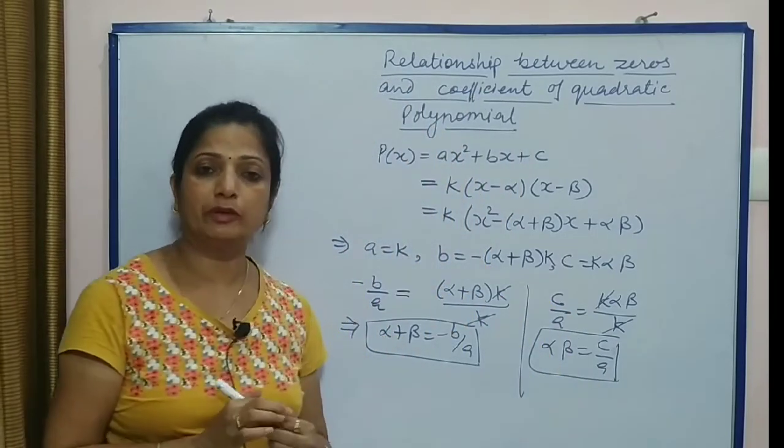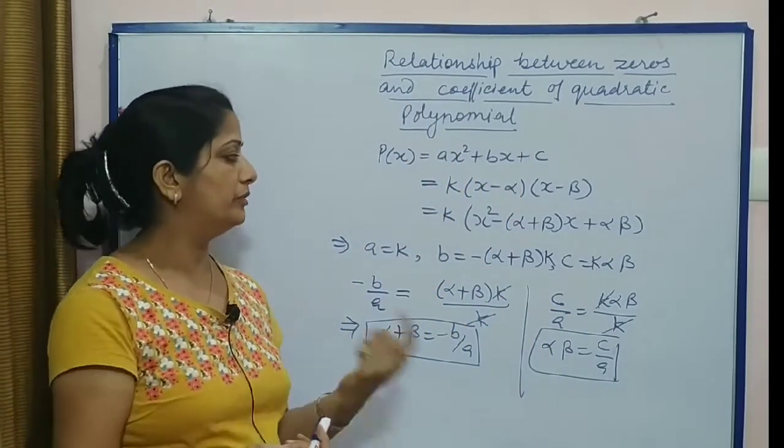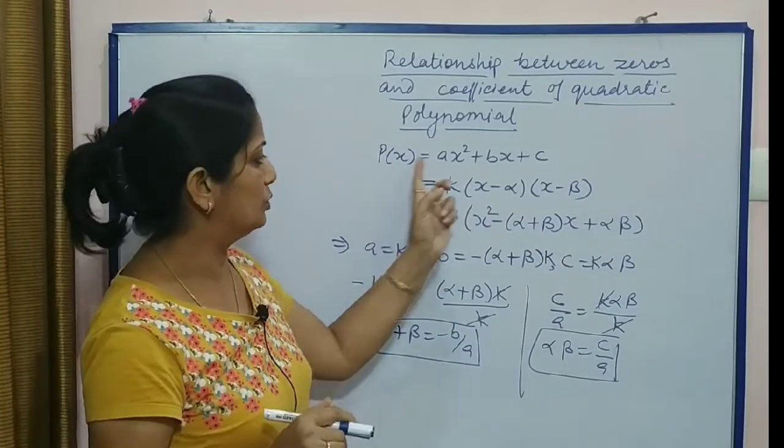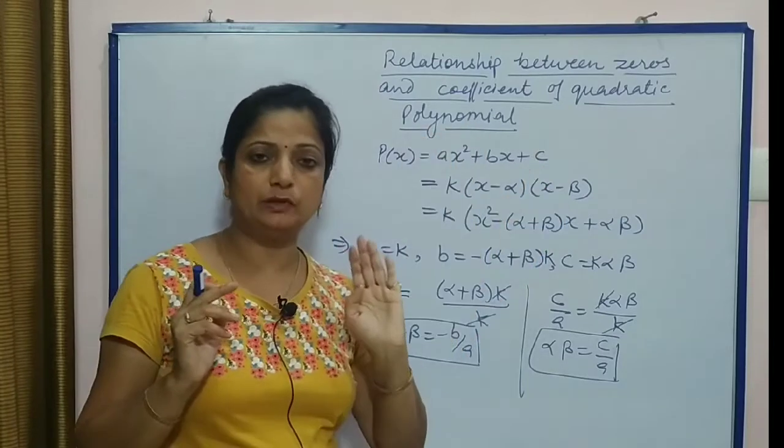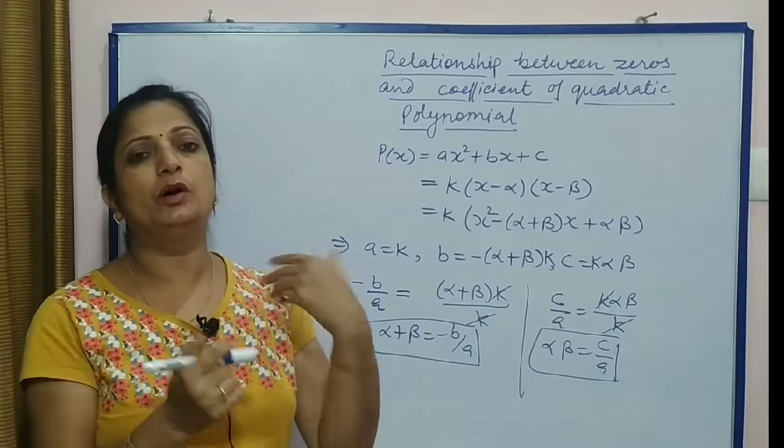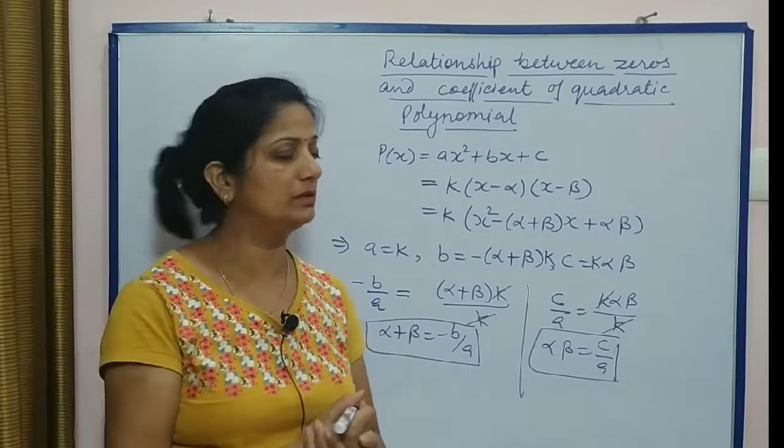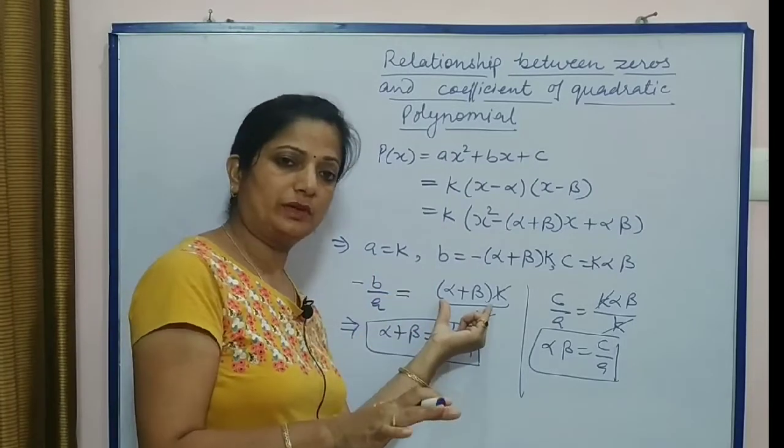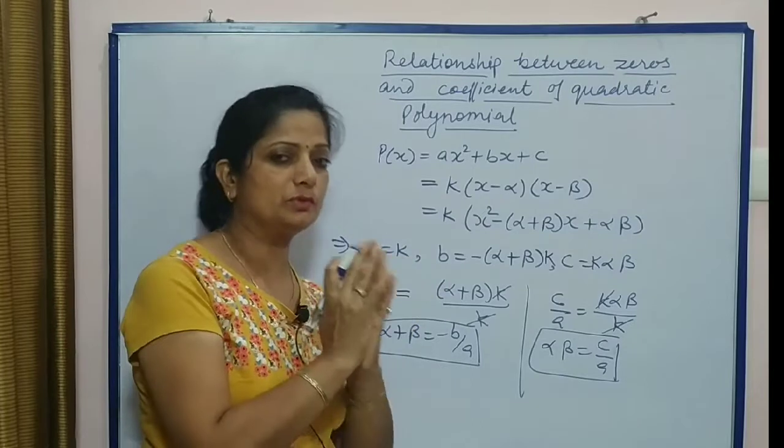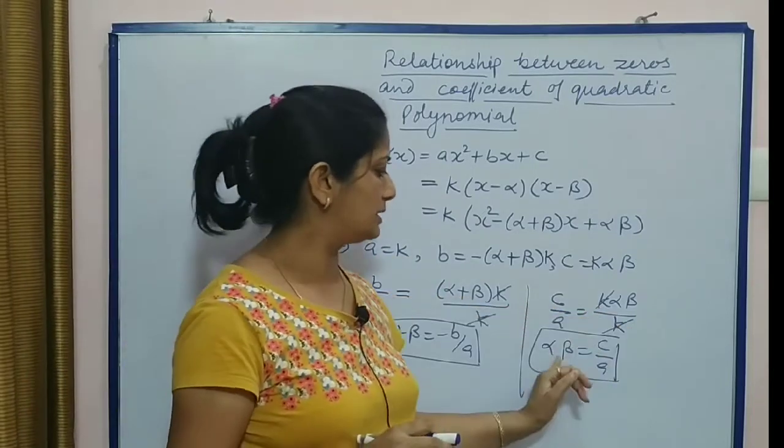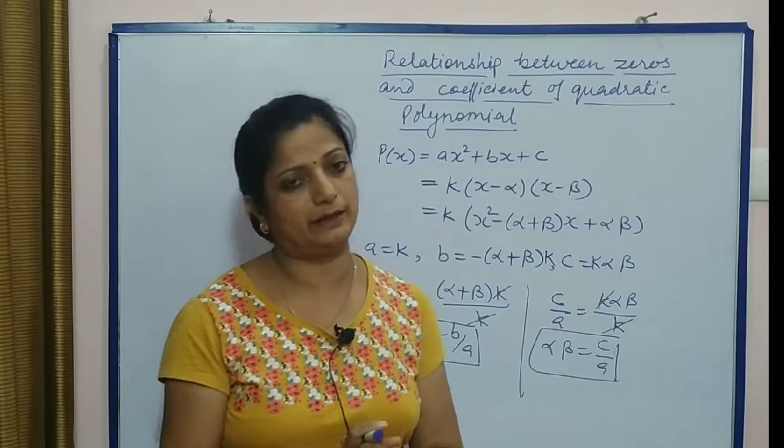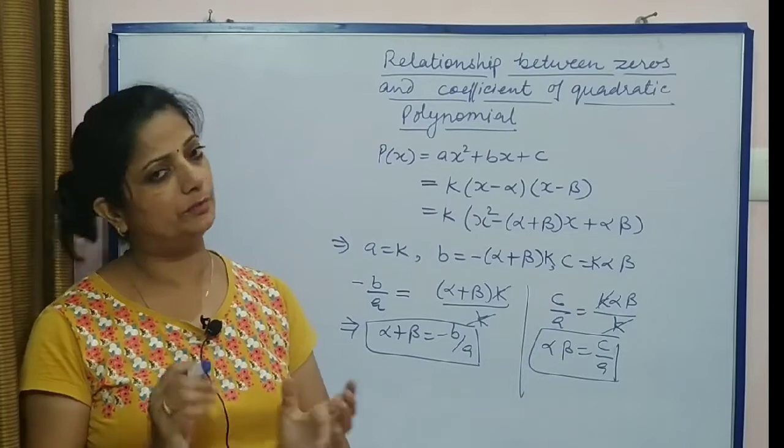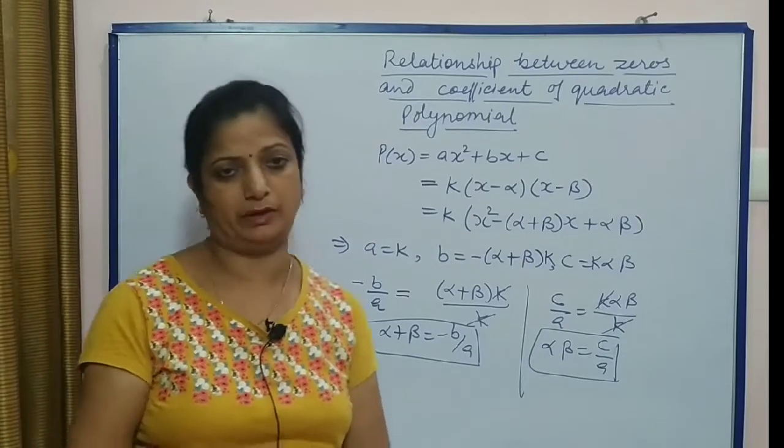So if we verify the relation between α, β and a, b, c - α + β calculate karna hai ya -b/a calculate karna hai, woh dono ki value bhi same milni chahiye. Aur isi type se hum kya kar sakte hain? Quadratic, cubic polynomial ke liye bhi verify kar sakte hain.